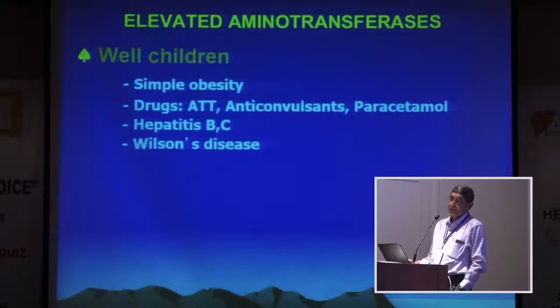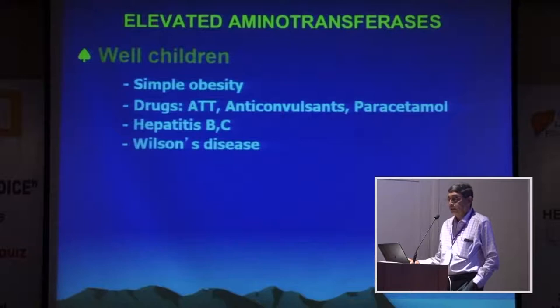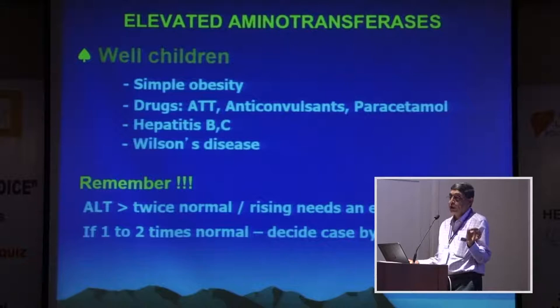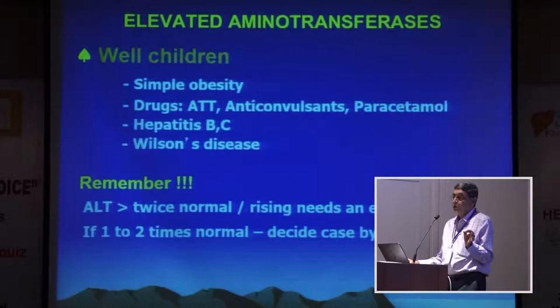If you have a well child with elevated ALT, think of NASH, drugs, hepatitis B and C, and Wilson's disease. Remember, if ALT is more than twice normal, only then does it call for an explanation. If someone has an ALT of 41, it doesn't mean you need to go ahead and investigate. If ALT is one to two times normal, decide case by case — if there are other findings, investigate; otherwise, leave it.